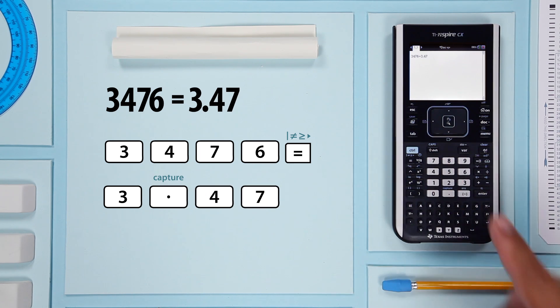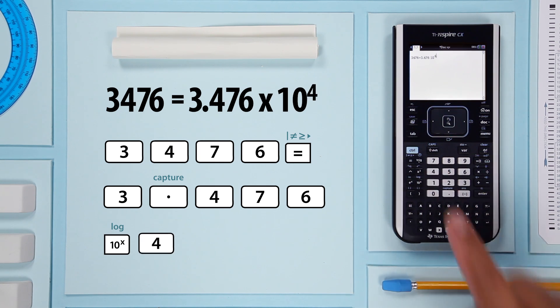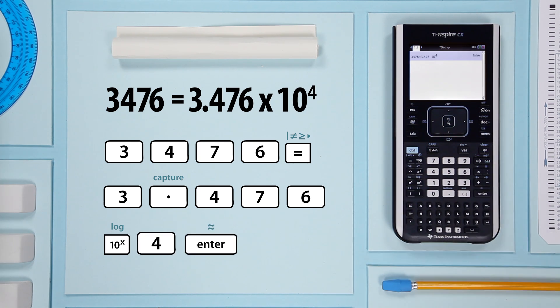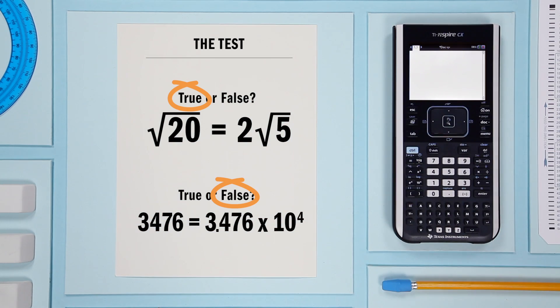To get that, press 10 to the power of 4. Then enter. This time, the result is false. They're not equivalent.